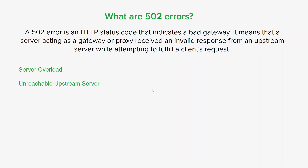Another cause is an unreachable upstream server, meaning the upstream server may be temporarily unavailable. It could be due to server maintenance, network issues, or the server being down. If there is a misconfiguration in the proxy settings, such as an incorrect IP address or port numbers, it can result in a 502 error. Problems with the DNS configuration can also lead to 502 errors — if DNS cannot resolve the IP address of the upstream server, the gateway won't be able to establish a connection. Lastly, firewalls or security measures might be blocking the communication between the gateway and the upstream server, resulting in a 502 error.